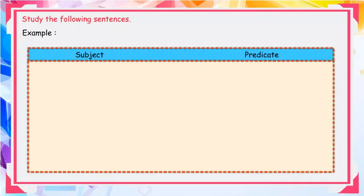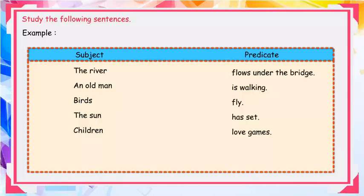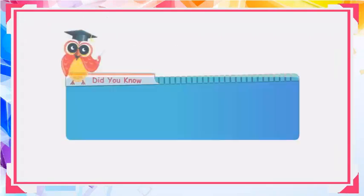Study the following sentences. Subject — Predicate: 'The river flows under the bridge.' 'An old man is walking.' 'Birds fly.' 'The sun has set.' 'Children love games.'